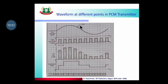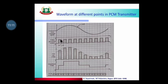To summarize the waveform description: we have a sine wave sent to the band-limited low-pass filter, and a pulse generator producing constant-width pulses. The pulse generator signal is used to sample the sine wave at regular intervals.